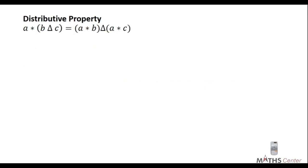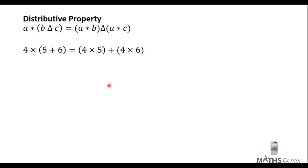The final property is the distributive property. It states that a star (b delta c) equals (a star b) delta (a star c). This is called the distributive property because we are distributing what is outside the bracket over what is inside.